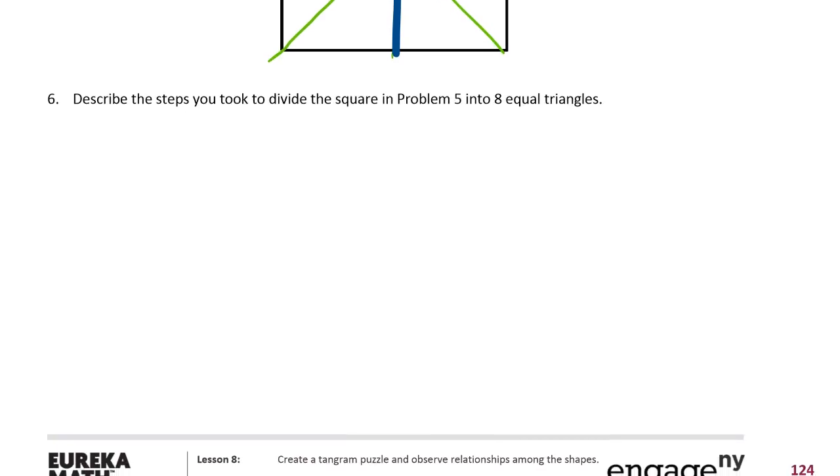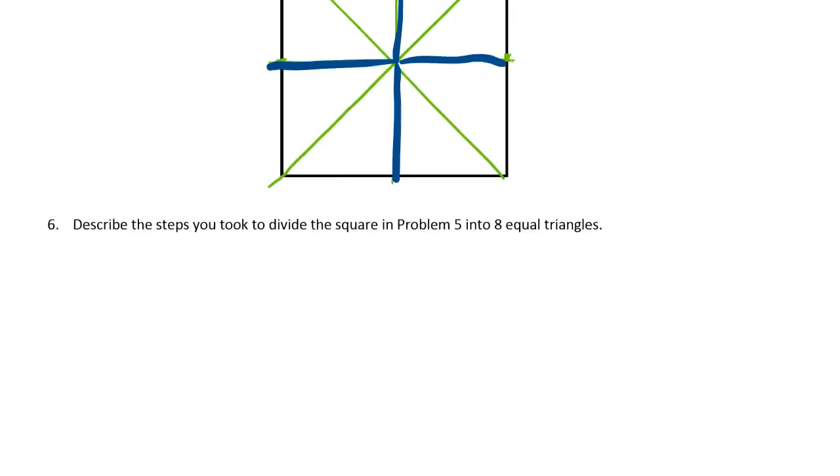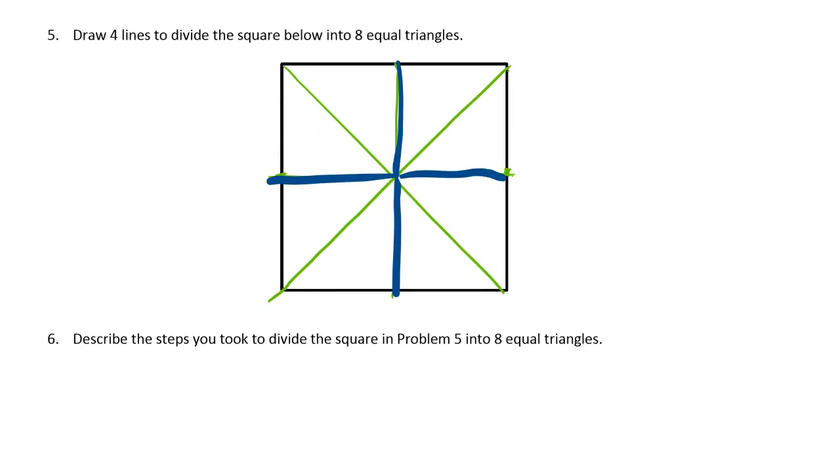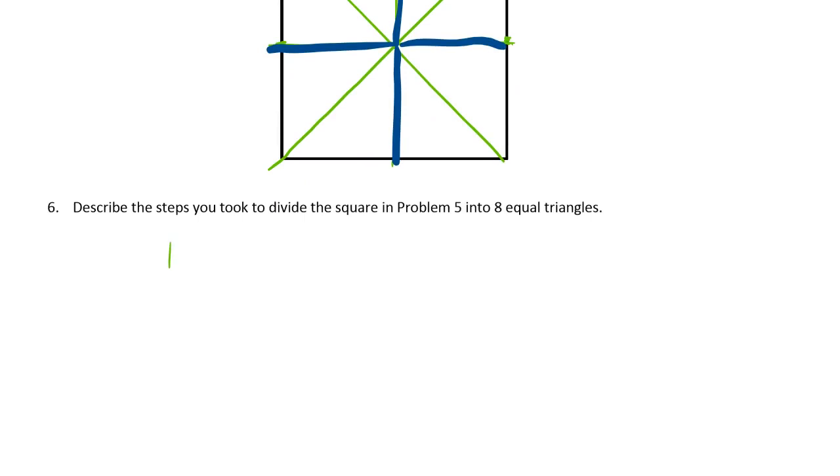Now describe the steps you took to divide the square in problem five into eight equal triangles. So we just have to find a way to say what I did. You'll probably be able to find a better way to say it than I do. I drew two lines connecting the corners.